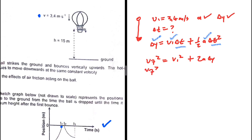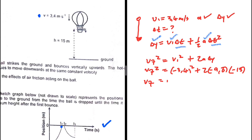Taking up as positive: vf² equals vi² plus 2a·delta_y. vi is minus 3.4, acceleration is minus 9.8, and the displacement is minus 15. Putting that in the calculator and taking the square root: vf² = (-3.4)² + 2×(-9.8)×(-15), giving vf equals 17.4803 meters per second.